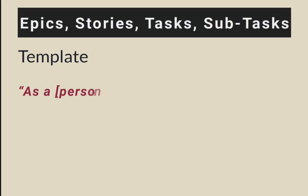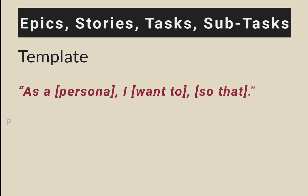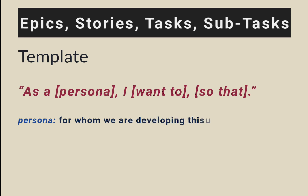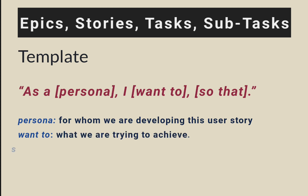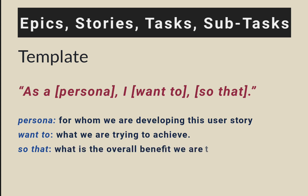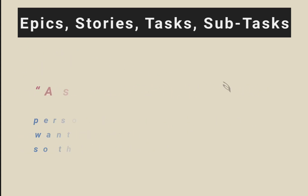So this is the template of the user story: as a [persona], I want to [action], so that [benefit]. Here, persona is for whom we are developing this user story. 'Want to' is what we are trying to achieve. 'So that' means the overall benefit that we will get if we implement this user story. Again, for a better understanding, let's look into an example.